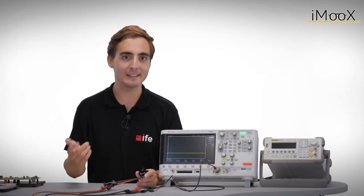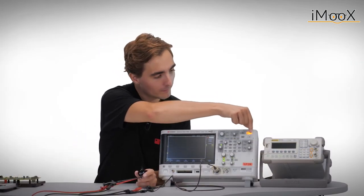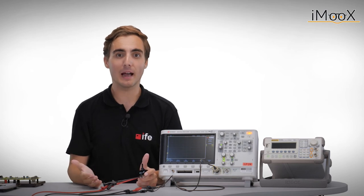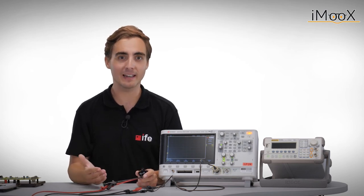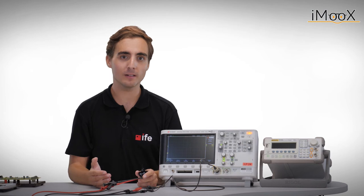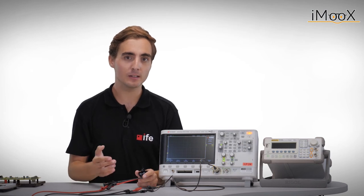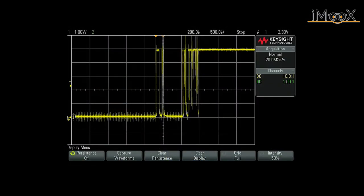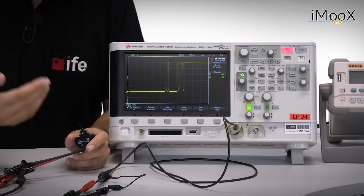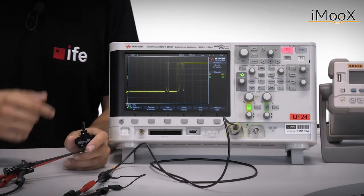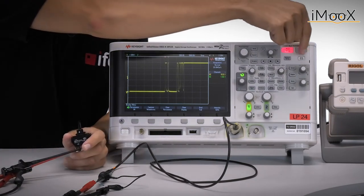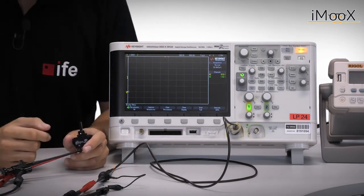Therefore, we have to push the single shot button. As the name implies, this only performs a single capture at the first trigger event and keeps the data so that it can be observed. We can see the contact bounce as we have expected it to be. If we want to observe another switching event, we have to enable the next shot by pressing the single shot button again.